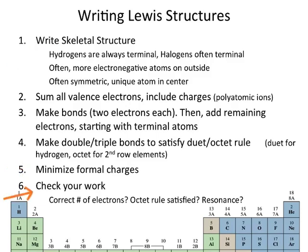Finally, please check your work. Count your total number of electrons in your structure and make sure you didn't lose or gain any. Double-check that you satisfy the octet rule for everything that should have its octet satisfied. And if you can make resonance structures, you have to do that — we'll talk about that in a subsequent video.